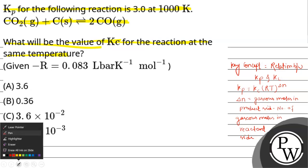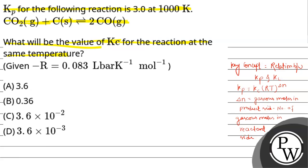First we will find out delta n. In the product side, there are 2 moles of carbon monoxide in gaseous state, so that gives 2. On the reactant side, the only gaseous species is CO2, and the number of moles of CO2 is 1. So delta n will be 2 minus 1, which equals 1.